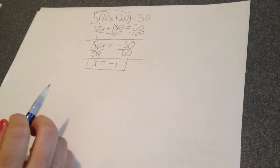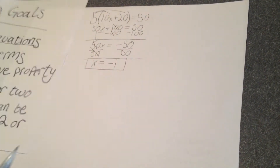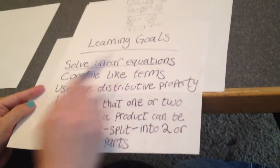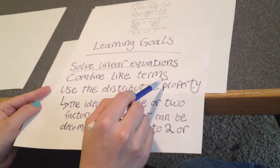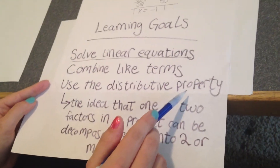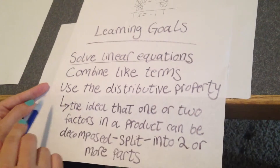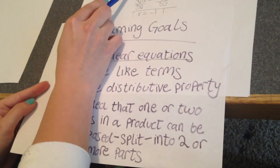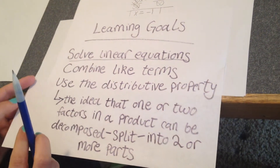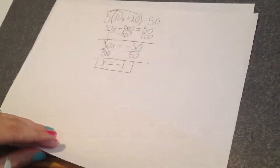Going back to our learning goals: we're on our way to solving linear equations. We have not yet combined like terms, but that will come up in our next equation. And we have used the distributive property, shown when we distributed our 5 to every term inside the parentheses.